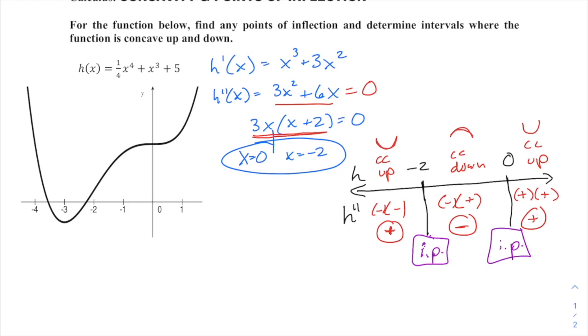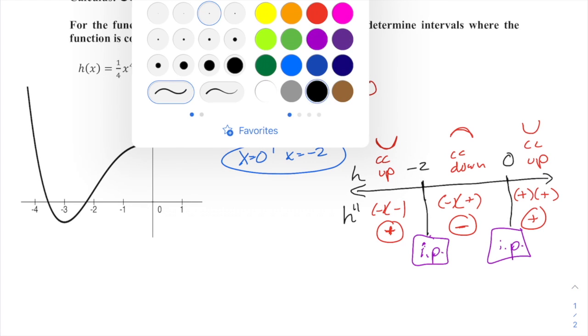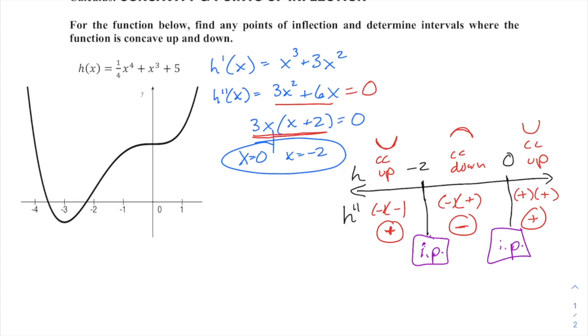Similar to our relative extrema, we want to find the y-coordinates of those points. So h of negative 2, plugging that back into the original function, will be one-fourth of negative 2 to the fourth will be positive 16. Negative 2 cubed is negative 8, plus 5. So you will get 4 minus 8, negative 4, plus 5. Negative 4 plus 5 is 1. And h of 0, everything drops out except for that 5.